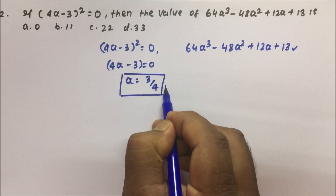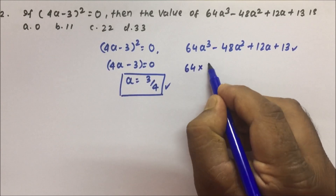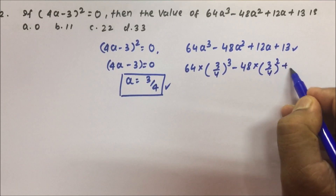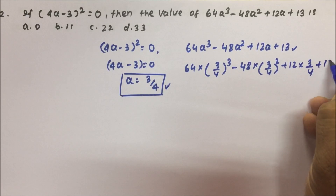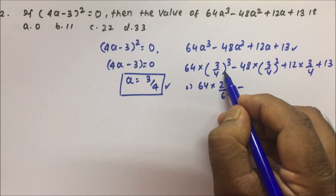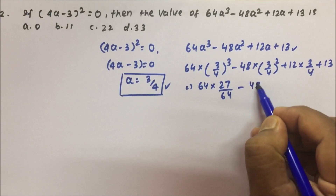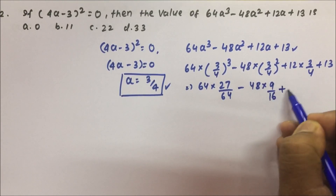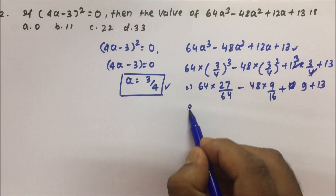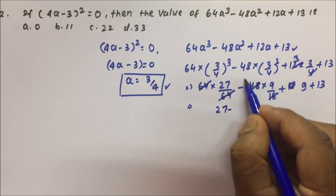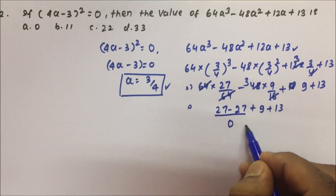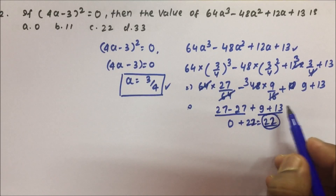We have got a = 3/4. Now put the value of a in the expression: 64 × (3/4)³ − 48 × (3/4)² + 12 × (3/4) + 13. After simplification: 64 and 64 cancel, giving 27. Then 48 and 16 simplify to give 27, and 12 × (3/4) = 9. So we get −27 + 27 + 9 + 13, and 9 + 13 = 22. So 22 is the correct answer.